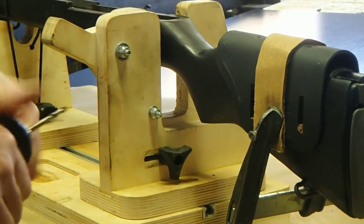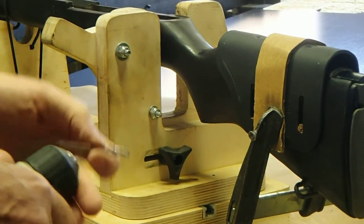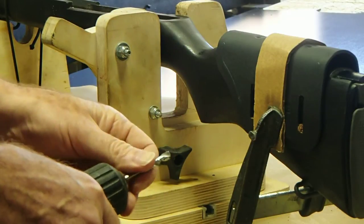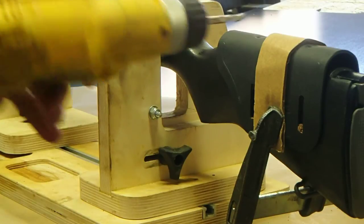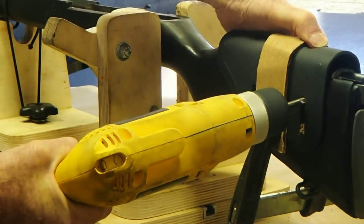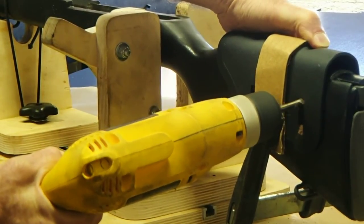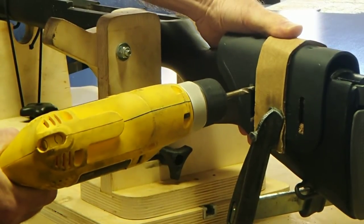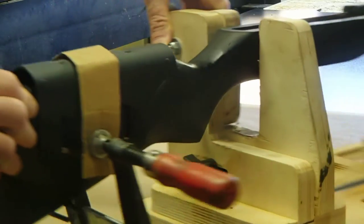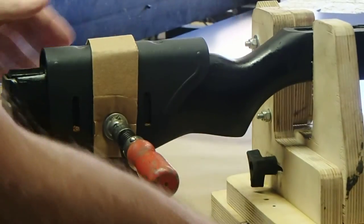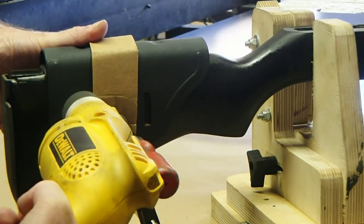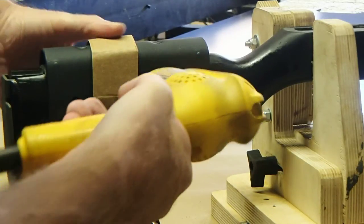Once the four holes are drilled with the three-sixteenths drill bit, insert the quarter-inch drill bit in your drill and open up the holes to a quarter-inch. Again, drilling through each side of the stock. Drill about halfway from each side.